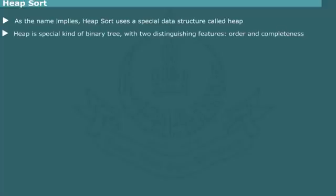Heap Sort: As the name implies, Heap Sort method uses a special data structure called Heap to perform sorting. Heap is, in fact, a special kind of binary tree with two distinguishing features referred to as Order property and Completeness property.